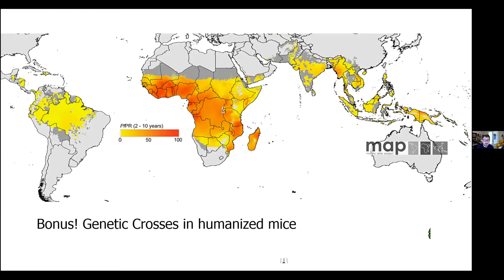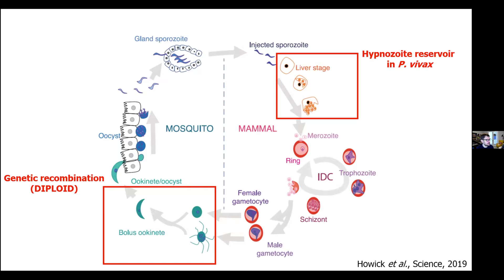I'm going to quickly go over the life cycle, as this will come up a number of times throughout the talk. The life cycle begins when an infected mosquito bites an individual and injects sporozoite stages into the bloodstream. These migrate to the liver, where they invade liver cells and develop within the cells. Each liver cell infected by a single sporozoite can have about 50,000 parasites within it that will burst out and start to invade the bloodstream. Critically, this stage is also where the hypnozoite reservoir for P. vivax occurs — parasites that lay dormant in the liver for months to years and can reactivate to cause secondary infections.